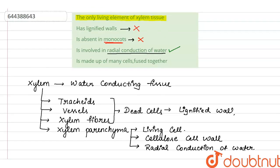Fourth statement says 'is made up of many fused cells together.' This is also wrong. This is the characteristic of vessels. So which one is correct for the living element of xylem is option 3.